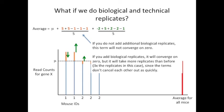If we do add additional biological replicates, it will converge on zero, but it will take more replicates than before. In this case, it will take three times the replicates, since the terms don't cancel each other out as quickly. Let's examine how much slower the convergence is.